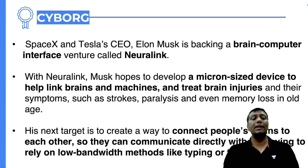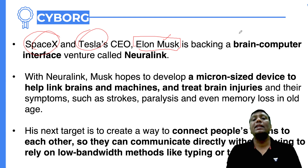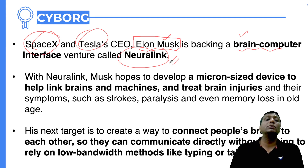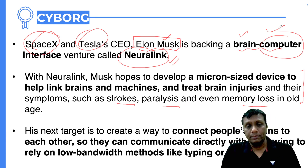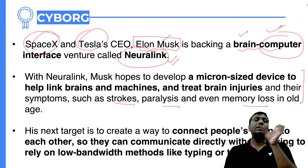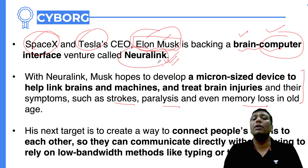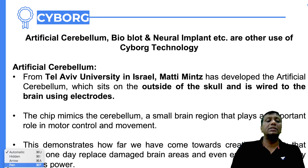SpaceX and Tesla CEO Elon Musk has planned in the coming future to connect the brain and computer interface with the name of Neural Link. For people who have problems like strokes, paralysis, or memory loss — whatever the person is going to think will appear on the computer screen, and the person in front can understand what they want to communicate. Elon Musk is trying to achieve it with Neural Link, which is a part of the brain-computer interface and also part of cyborg.